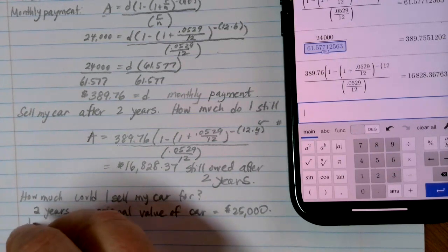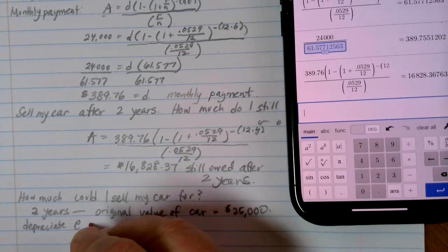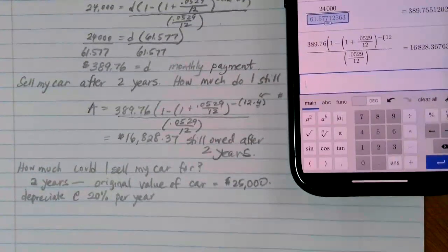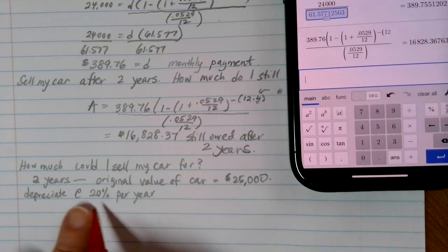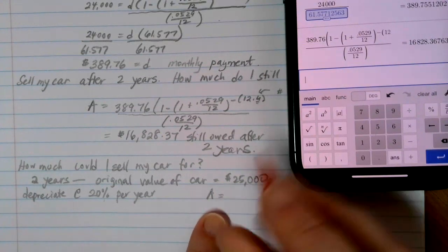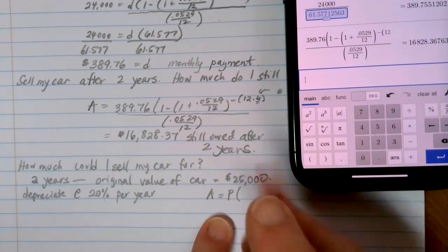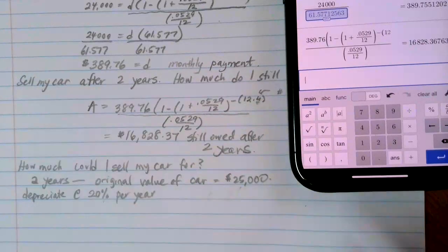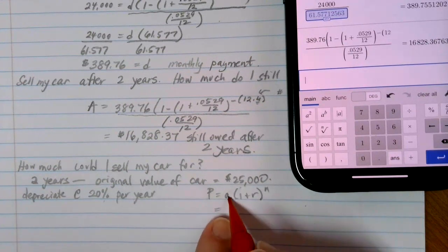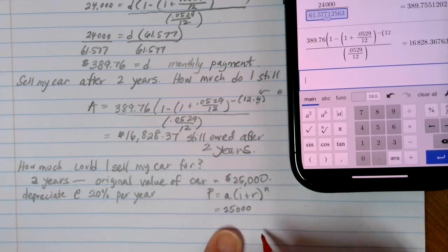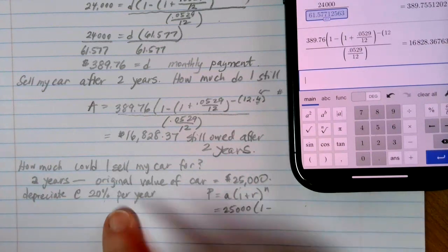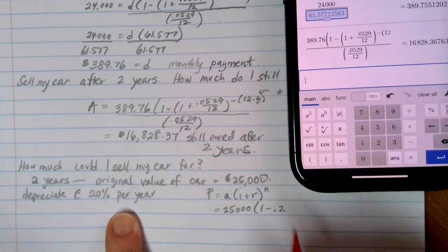Most cars depreciate at about a rate of 20% per year. As soon as you drive that car off the lot, it starts losing value. If you recall, our formulas for depreciation, we're depreciating by a constant percentage, so this follows an exponential growth pattern. Our formula that we used for that was P equals A times 1 plus R to the nth power. In this case, A is my starting value, which is the value of my car, $25,000. My rate, I'm losing 20% every year, so I'm going to use a minus, and I'm going to change that 20% to 0.20.